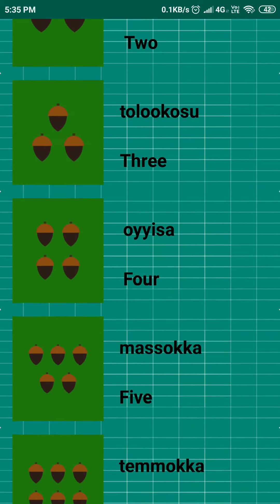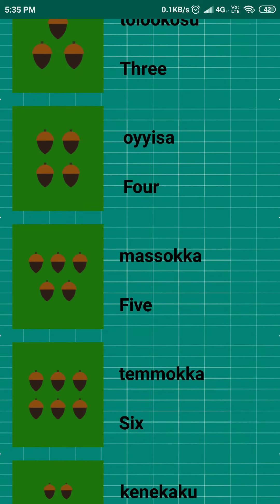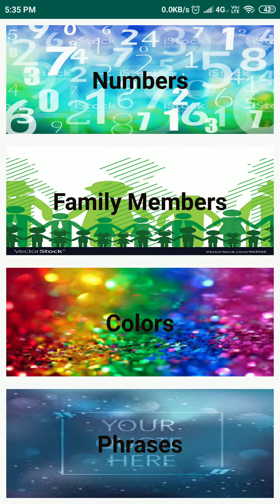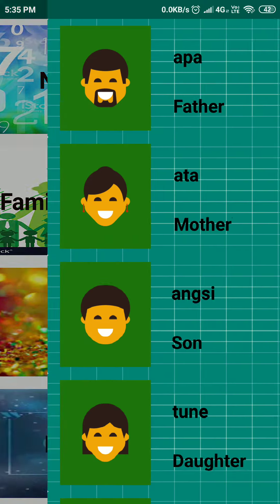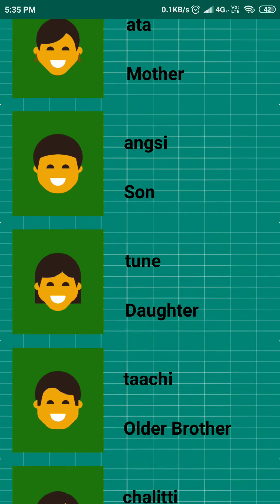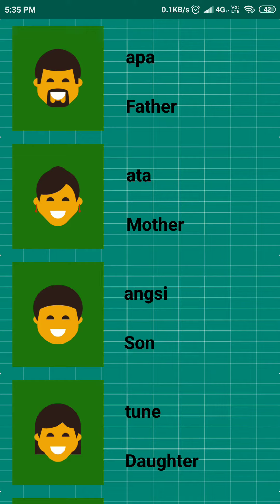If we click on any of these items — let's say 'one' — you hear the translation of each individual word. Now let's navigate to the other activities. This is the Family activity; it gives translations for family members in the regional language known as Mewok.